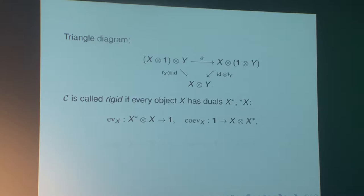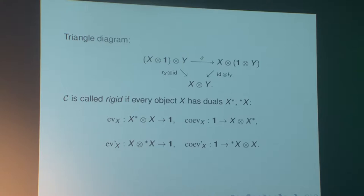We also have two diagrams that generalize the duality in the category of finite dimensional vector spaces. In that category, the evaluation is just the usual evaluation map, and the co-evaluation map takes the element one in the unit object, which is the base field, to the sum of dual bases. Similar conditions are required for the right duality.